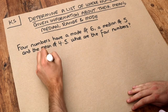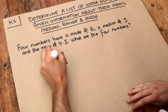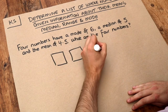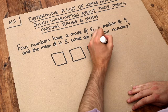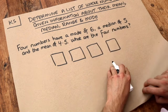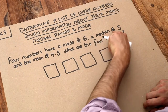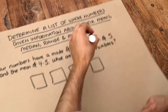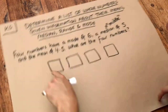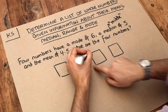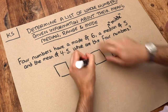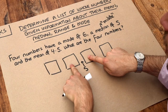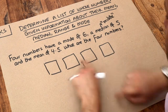Let's put four boxes to hold the four numbers in, and we're going to arrange these numbers in ascending order. I tend to start with the median. We've got a median of five, and remember the median means the middle number. Now because there is no single middle number, this median of five is going to be halfway between the two middle numbers either side.